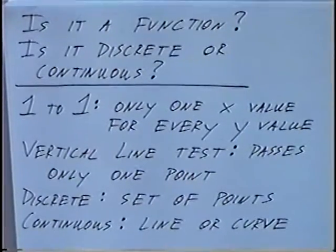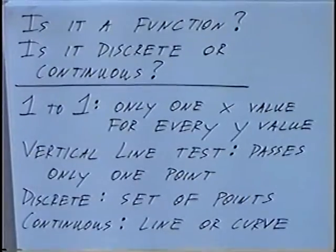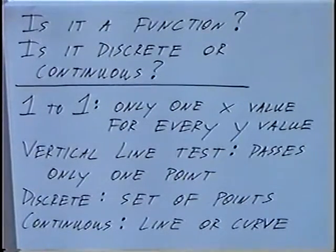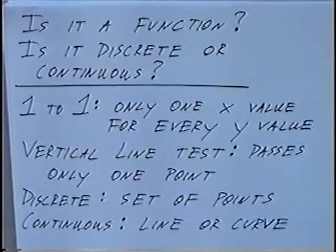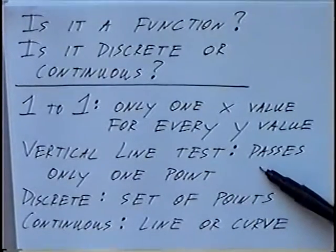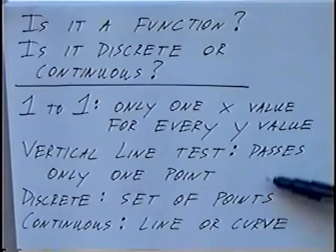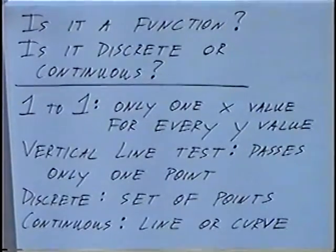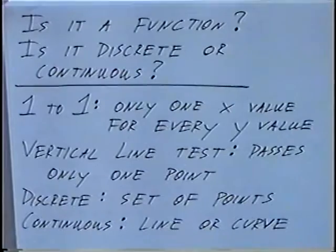The title of this section is: Is it a function, and is it discrete or continuous? The first definition is one-to-one: only one X-value for every Y-value, meaning every X-value can only have a single Y-value. If you have the same X-value listed twice but with different Y-values, then it is not one-to-one. The second definition is the vertical line test: if a vertical line drawn through any part of the graph passes only one point, it passes the vertical line test and is a function. If it goes through two or more points, it does not pass and is not a function.